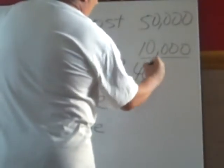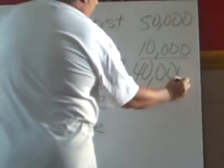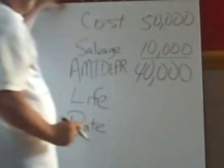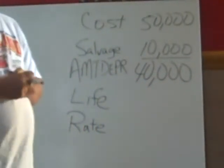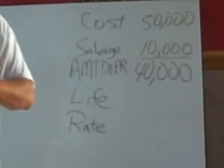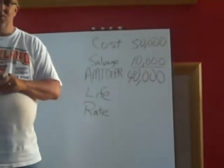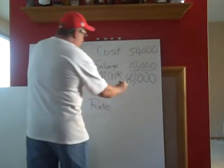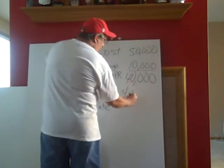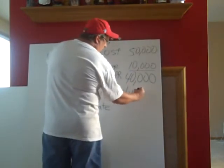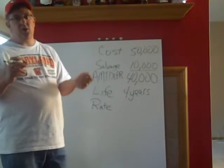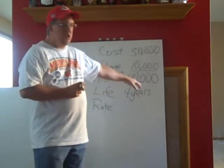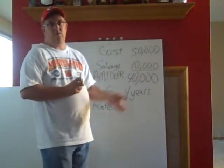So our cost was $50,000, making the amount to be depreciated $40,000. Our asset has an estimated useful life of four years — that's how long we expect to be able to use the asset. So we're going to spread that $40,000 over four years.